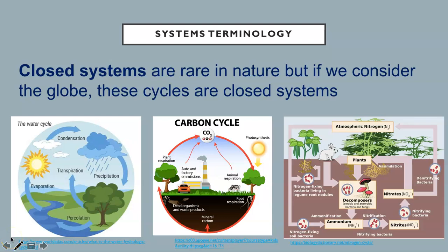Closed systems are rare in nature, but if we consider the globe, these cycles could be considered closed systems. On a global scale, the hydrological, carbon and nitrogen cycles are all closed because they exchange only energy and not matter within their systems and the surrounding.